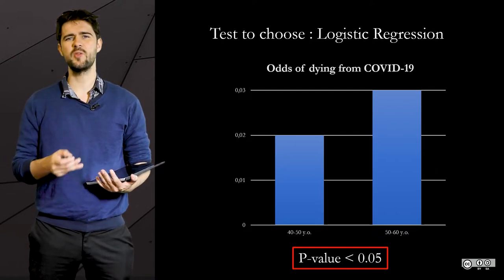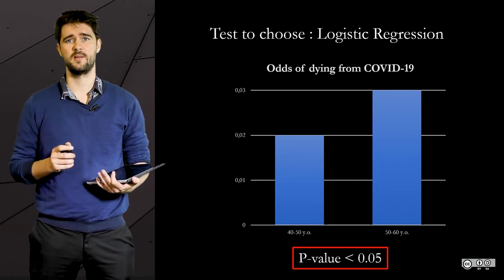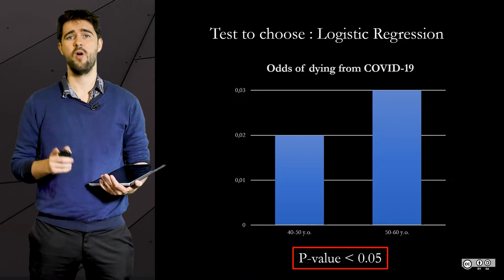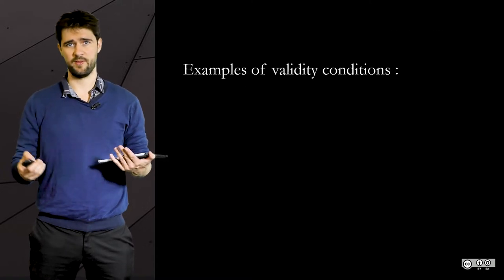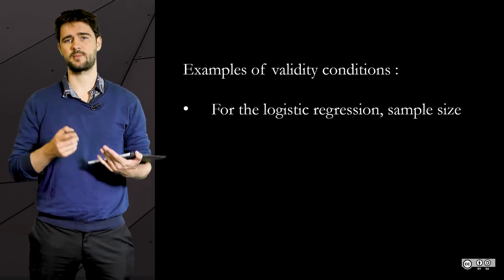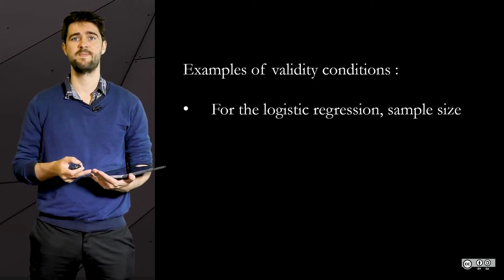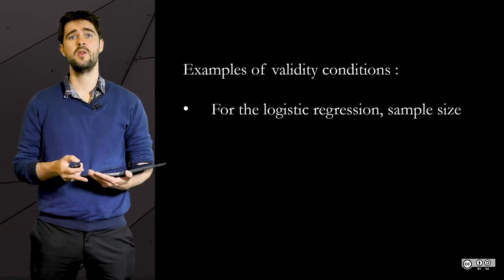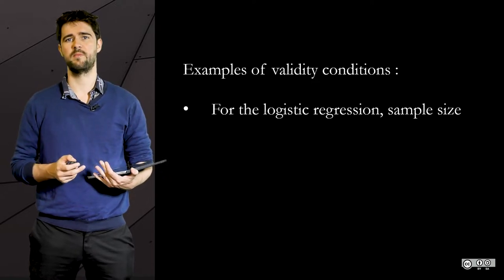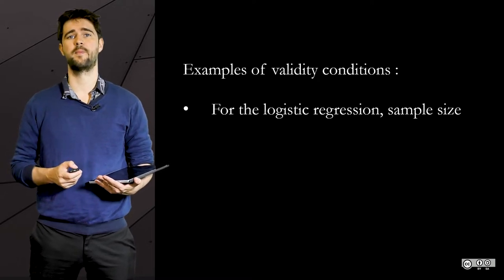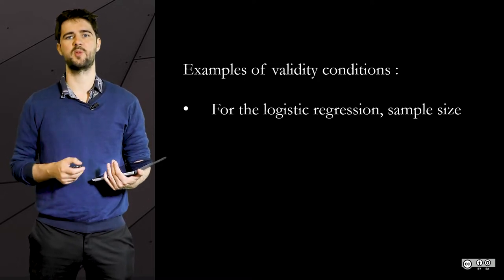And let's now assume that you have chosen the right test. Now you must check whether you have the right to use such a test. For instance, in the case of the logistic regression, if one of the categories in your data, let's say people in their 50s, has too little individuals, then you should not perform the test. And you should collect additional data prior to the analysis. At least if you want your claims to be robust.